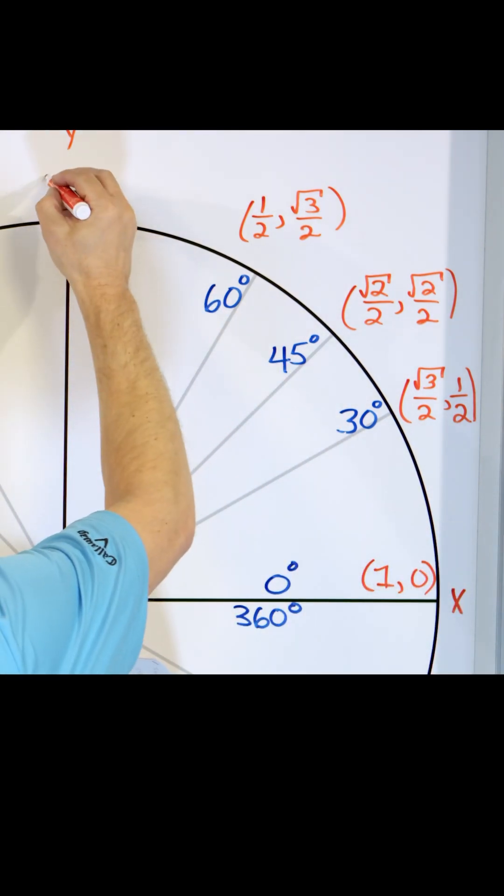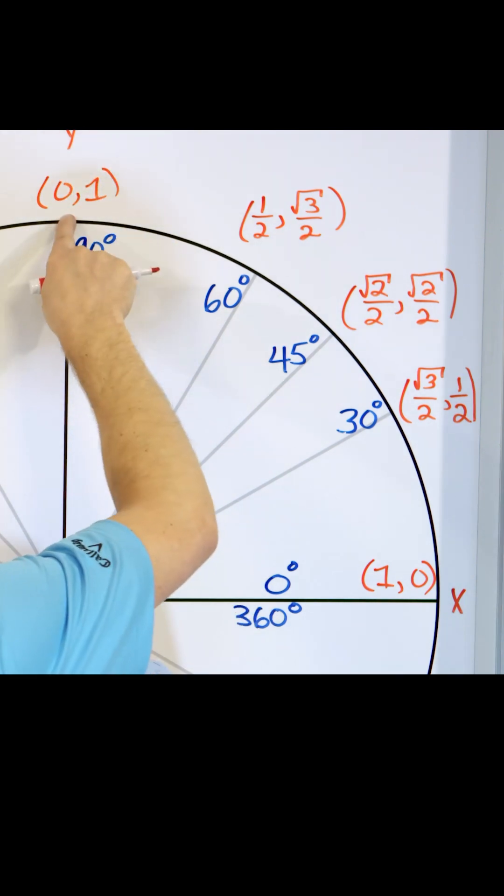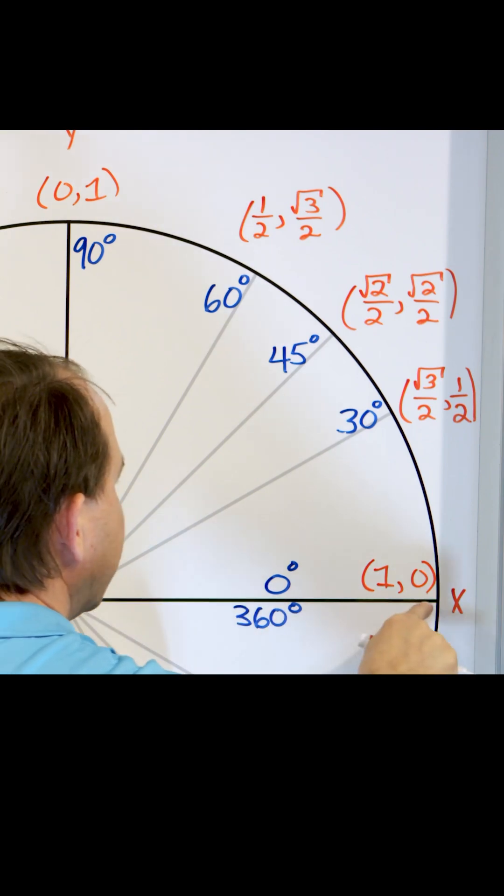What would this point up here be? This point would be zero comma one. X comma Y zero comma one. X comma Y one comma zero.